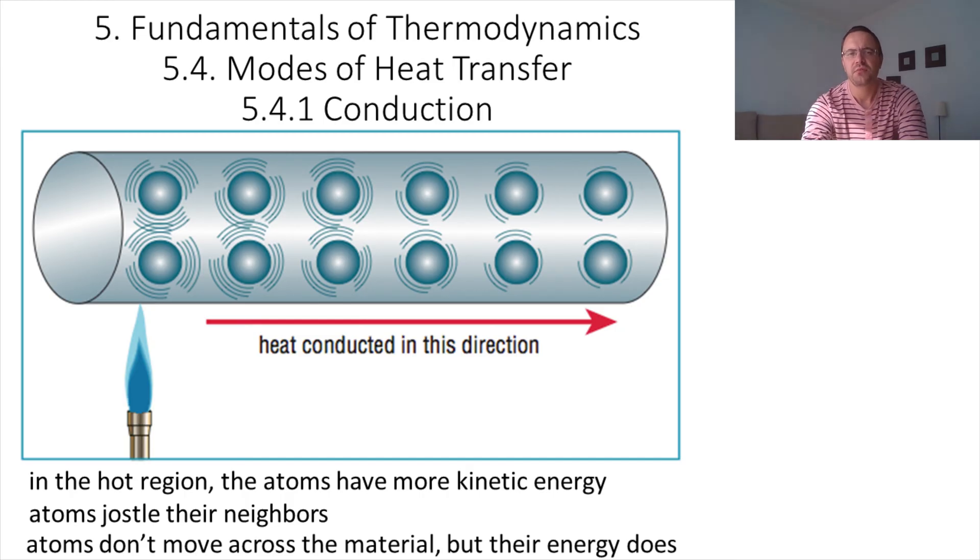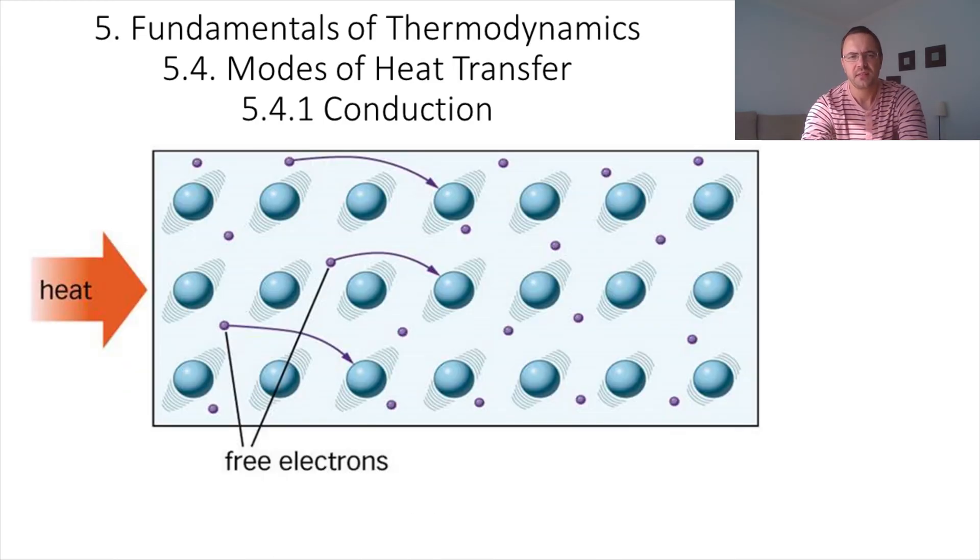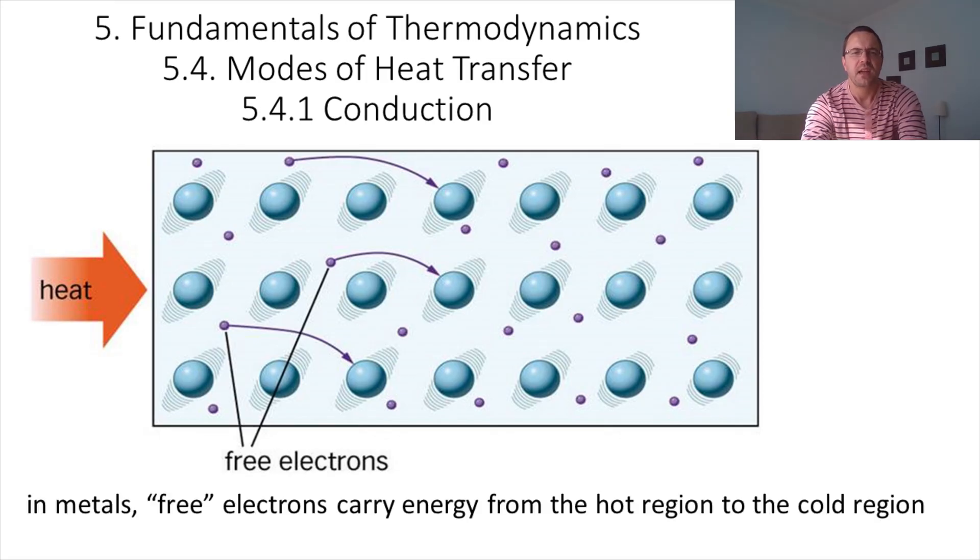All materials conduct heat like that, but in metallic materials there is an additional contribution. Metals conduct electricity because they have electrons that are free to move, and those free electrons can also carry energy from the hot region to the cold region. This is a very efficient way to transfer heat, and so metals are good conductors of heat.